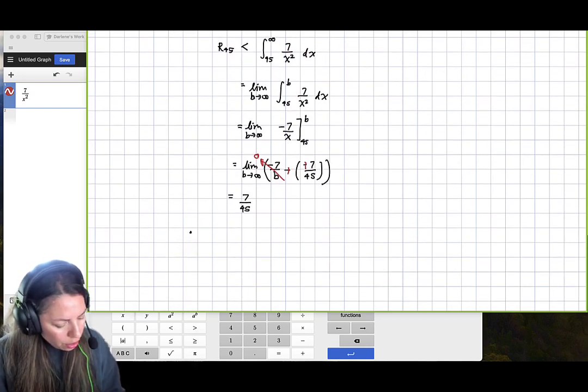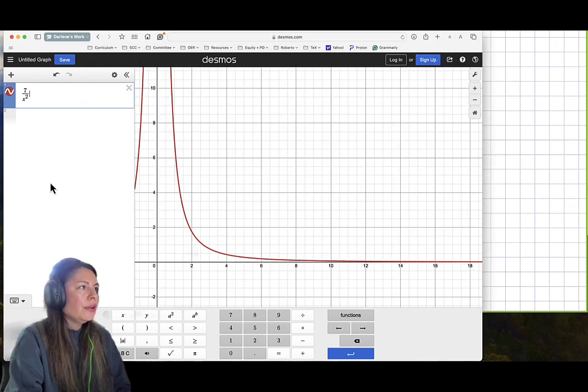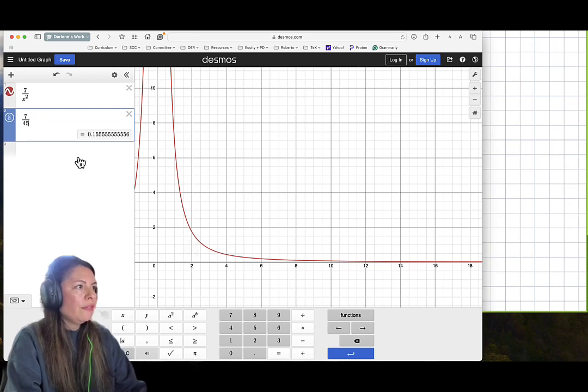So therefore, we can say that the remainder estimate is at most 7 over 45. So if we go ahead and put that into the calculator here, I put 7 over 45, notice the value here, 0.155 repeating.